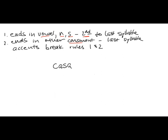Let's try the word papel. Papel. Where is the stress — is it papel or papel? It is, of course, papel. The stress is on the last syllable. Does this fit our rules? This word ends in something other than a vowel, N or S — it ends in some other consonant. So the stress should be on the last syllable, and that's where it is. So it fits rule number two, therefore it does not need a written accent.